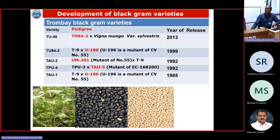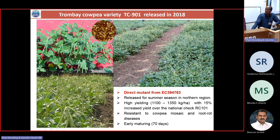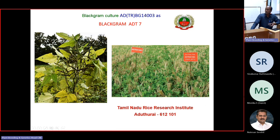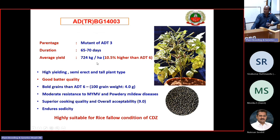One example of a direct mutant in cowpea: TC-901, released in 2018 for the northern part of the country, suitable for summer cultivation, matures in 70 days. This is the gamma ray induced direct mutant from exotic culture EC 394-763. Another example from TNAU: ADT7 rice fallow black gram, developed through mutation breeding funded by the Board of Research in Nuclear Sciences. This variety has already been released — a mutant variety through gamma rays released for rice fallow cultivation. ADT7 also showed good baking quality and is highly suitable for rice fallow conditions, released from TNAU.